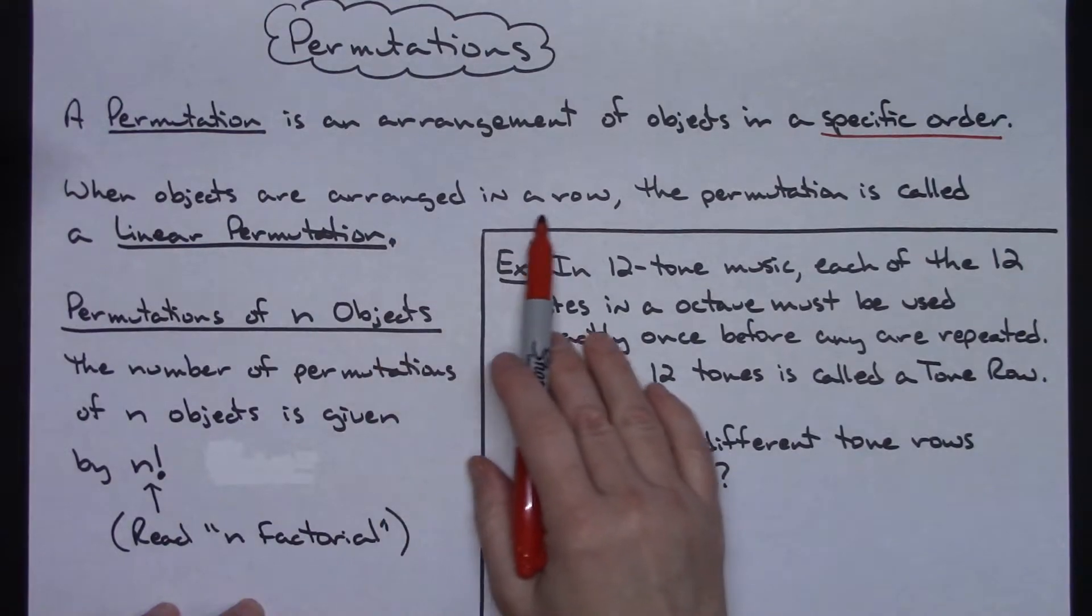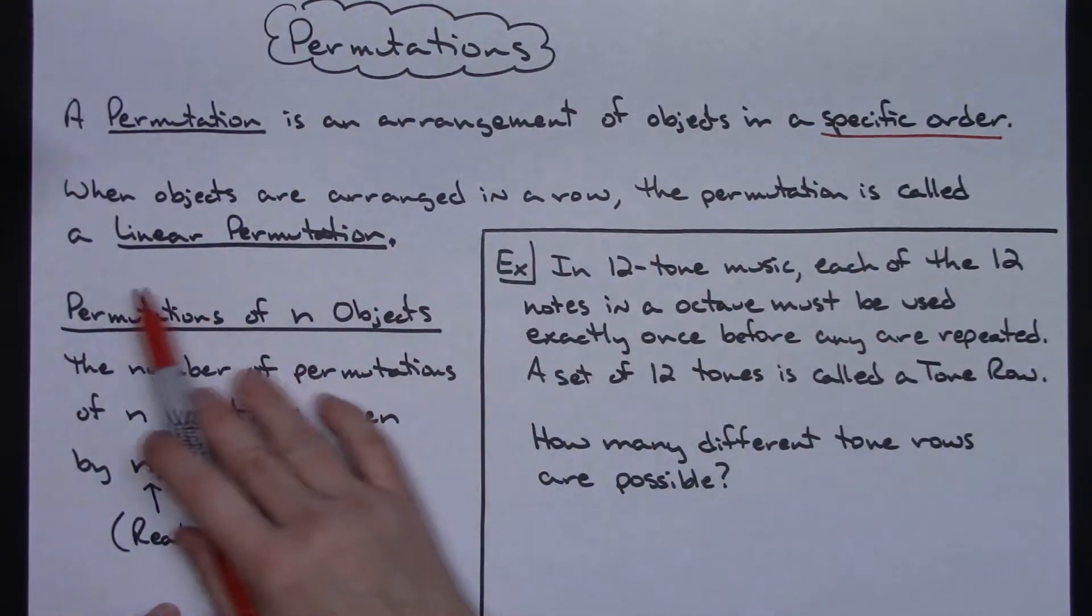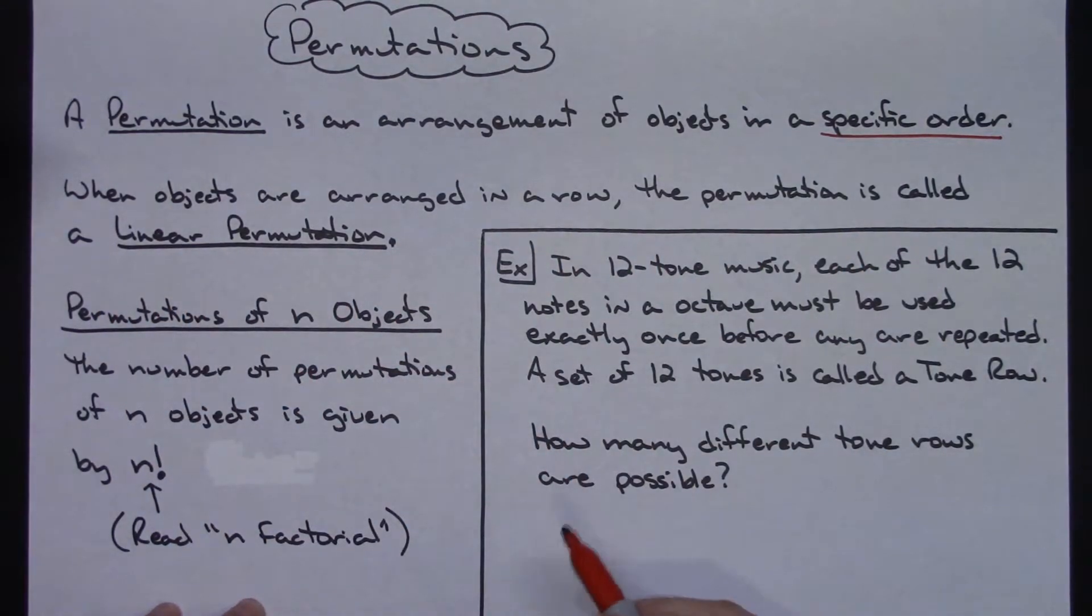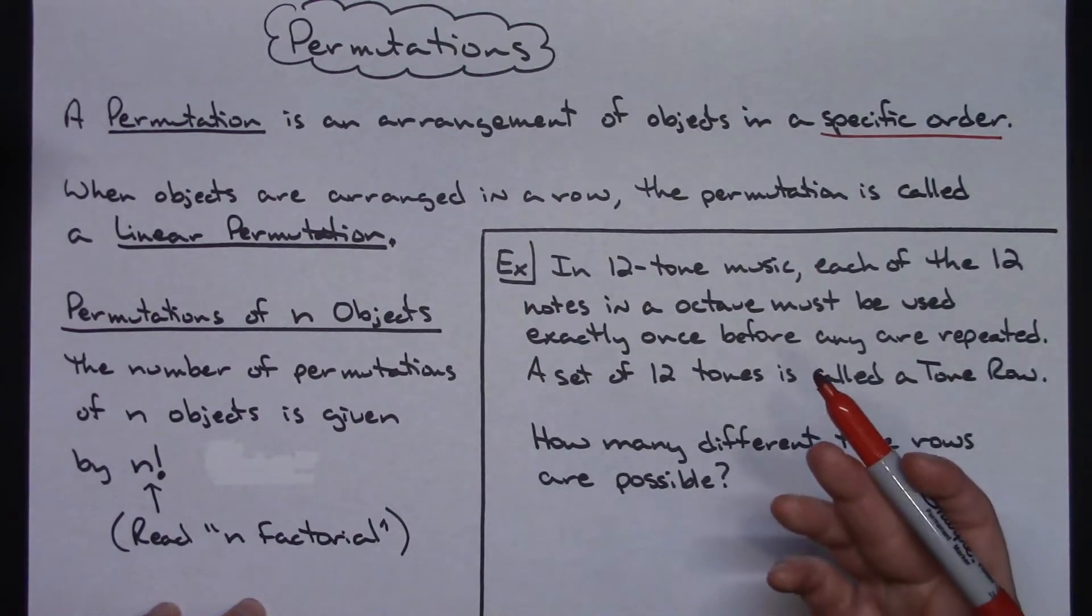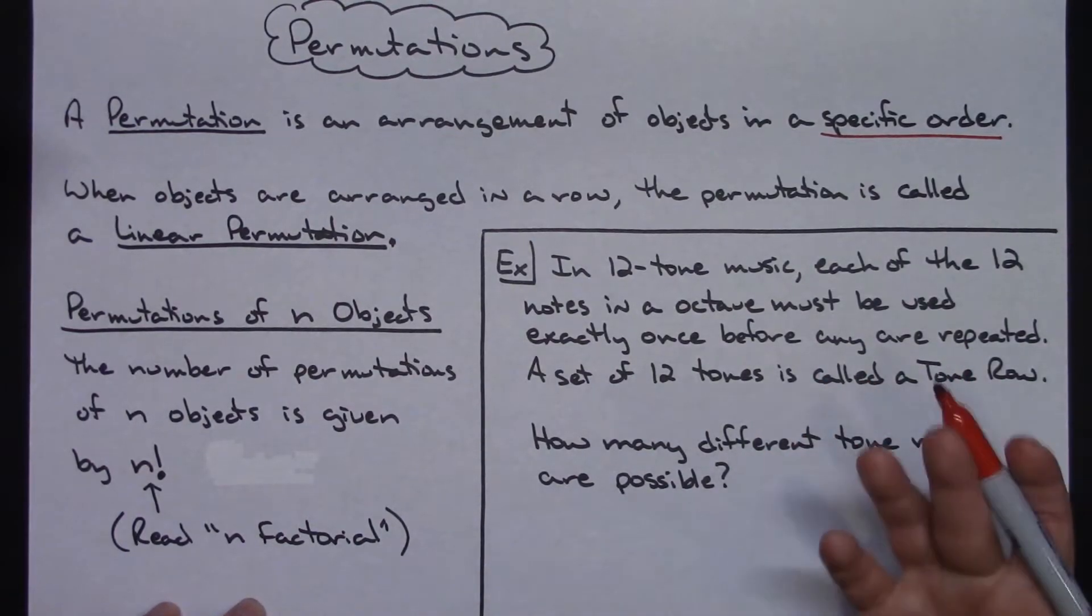When objects are arranged in a row, the permutation is called a linear permutation, which most of the time when you're doing permutation problems you are referring to a linear permutation.